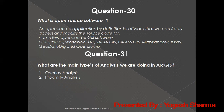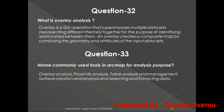What are the main types of analysis we can do in ArcGIS? The main analyses are overlay analysis and proximity analysis. Overlay analysis is a GIS operation that superimposes multiple datasets together for the purpose of identifying relationships between them. It creates a composite map by combining the geometry and attributes of the input datasets. Commonly used tools in ArcMap include overlay analysis, proximity analysis, table analysis, and management tools.